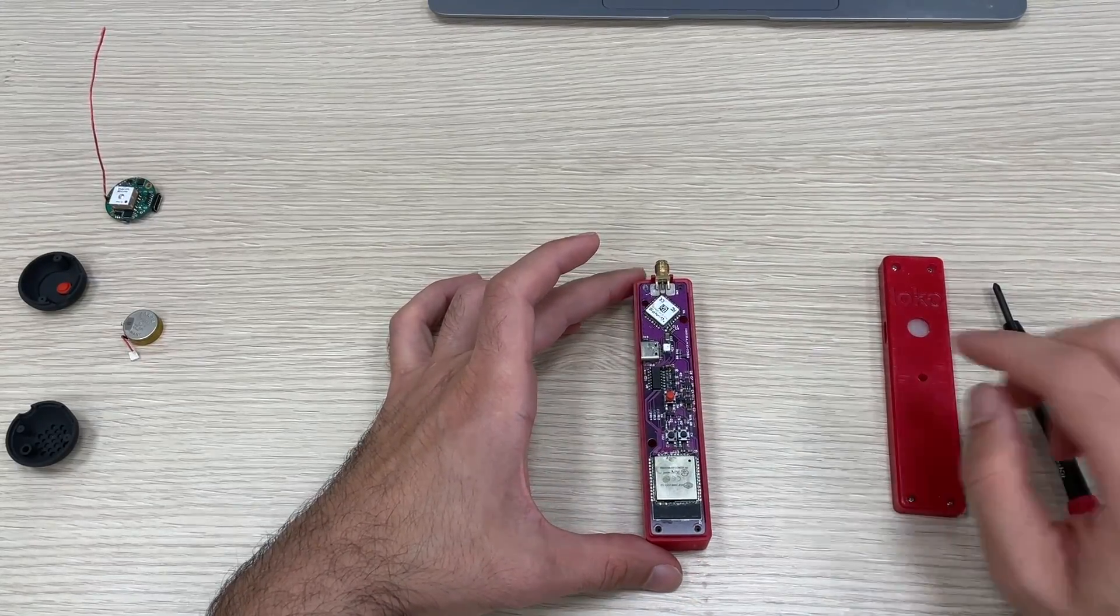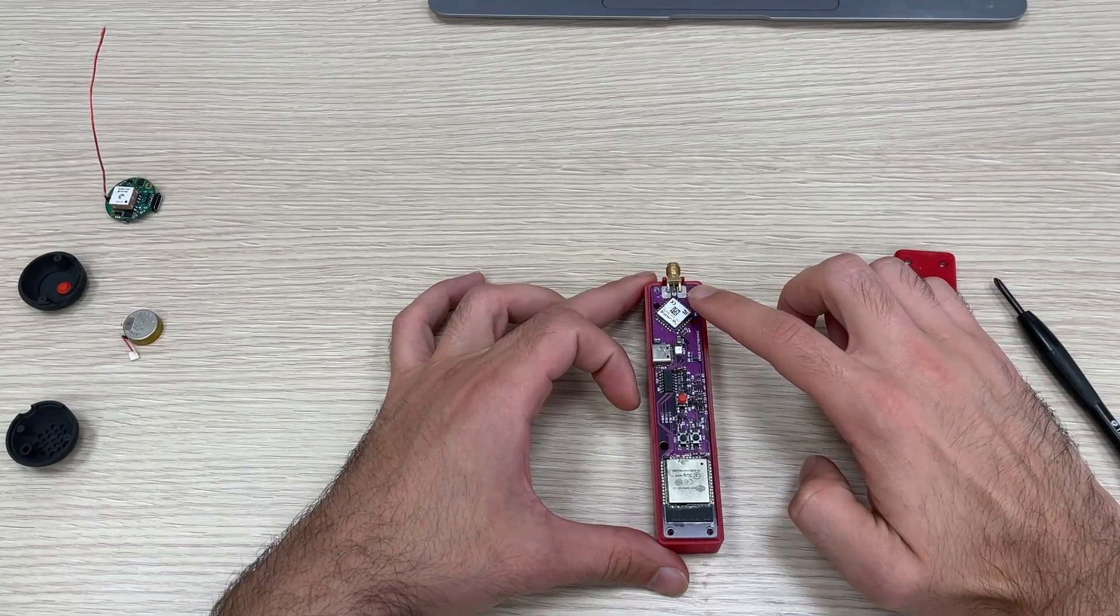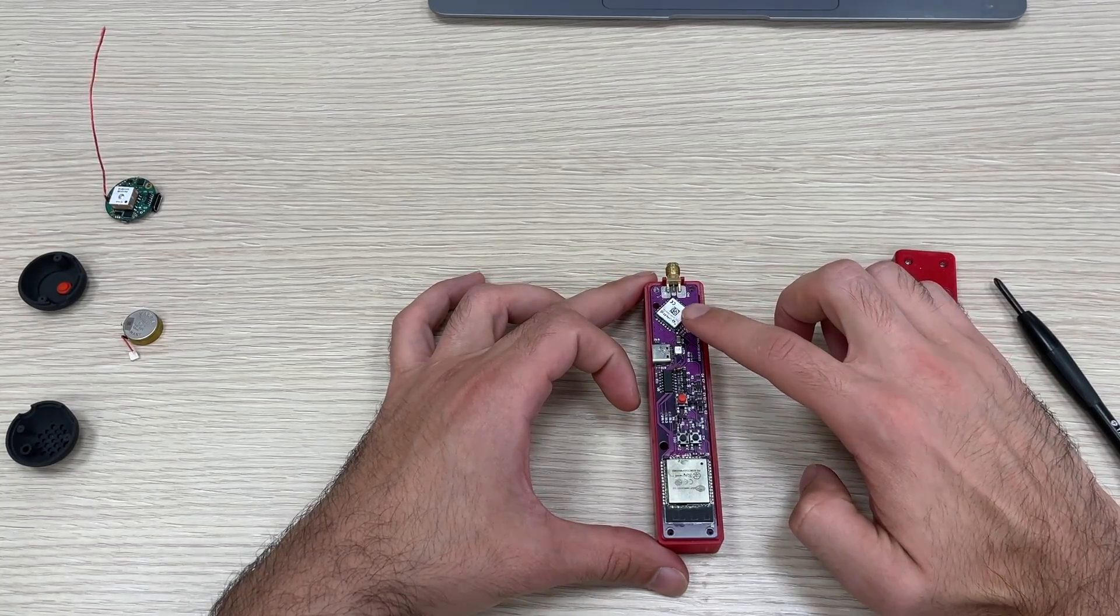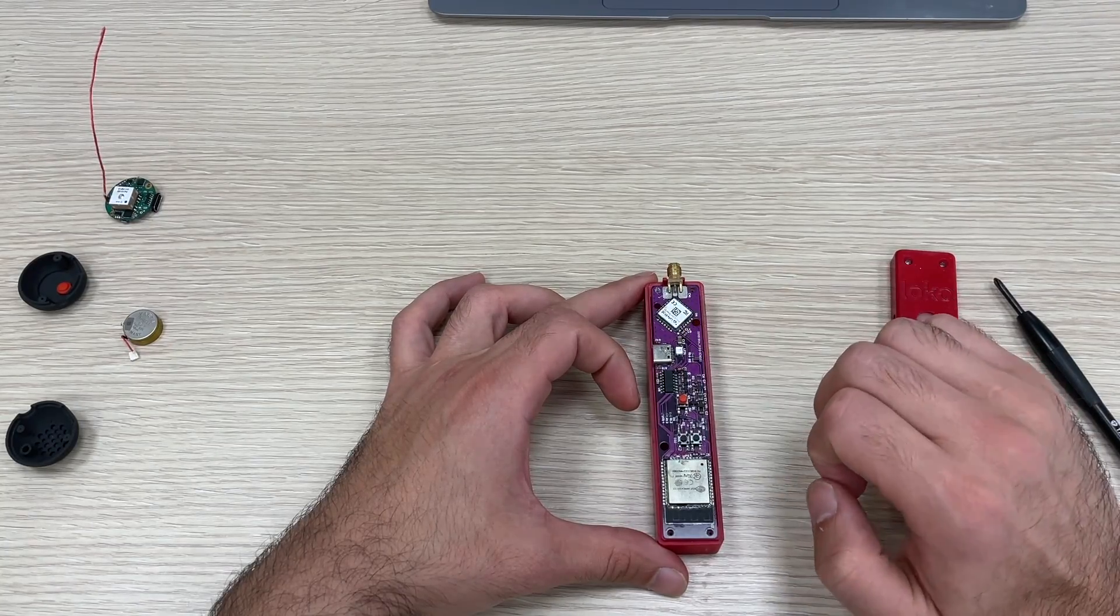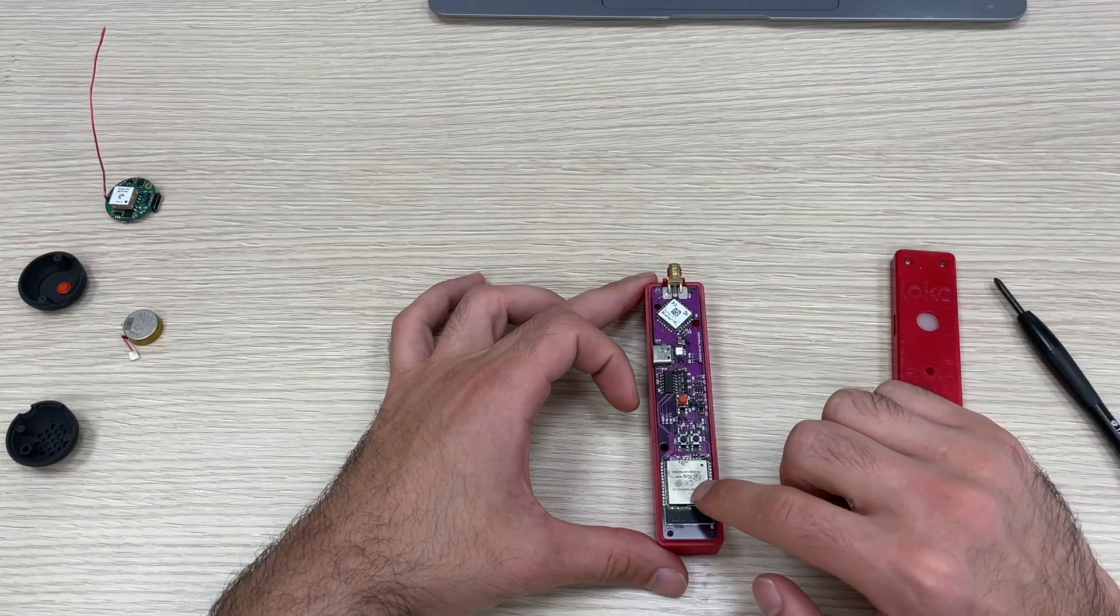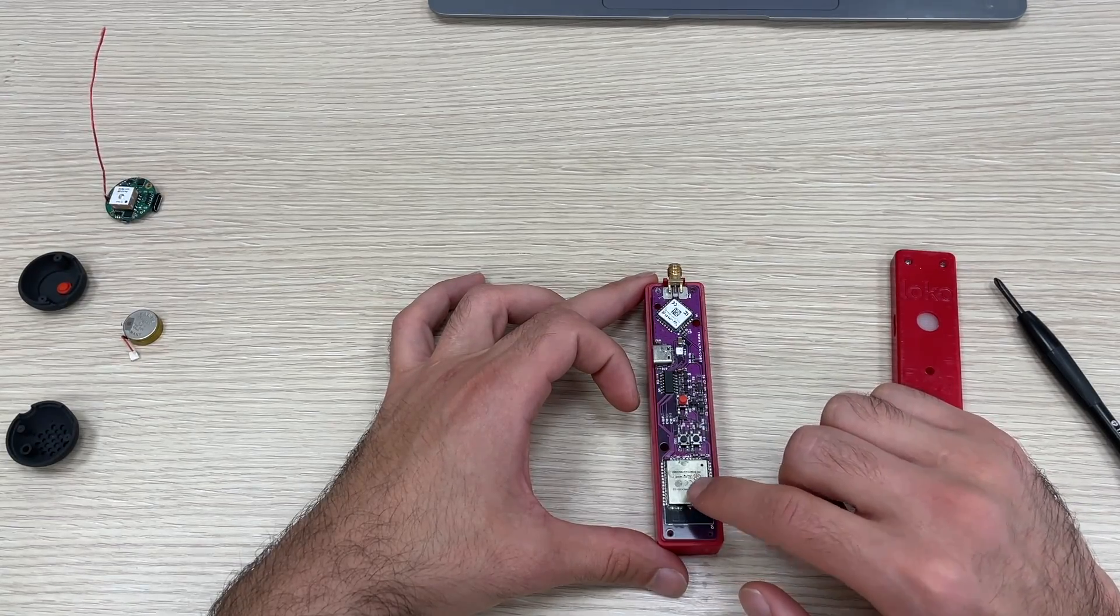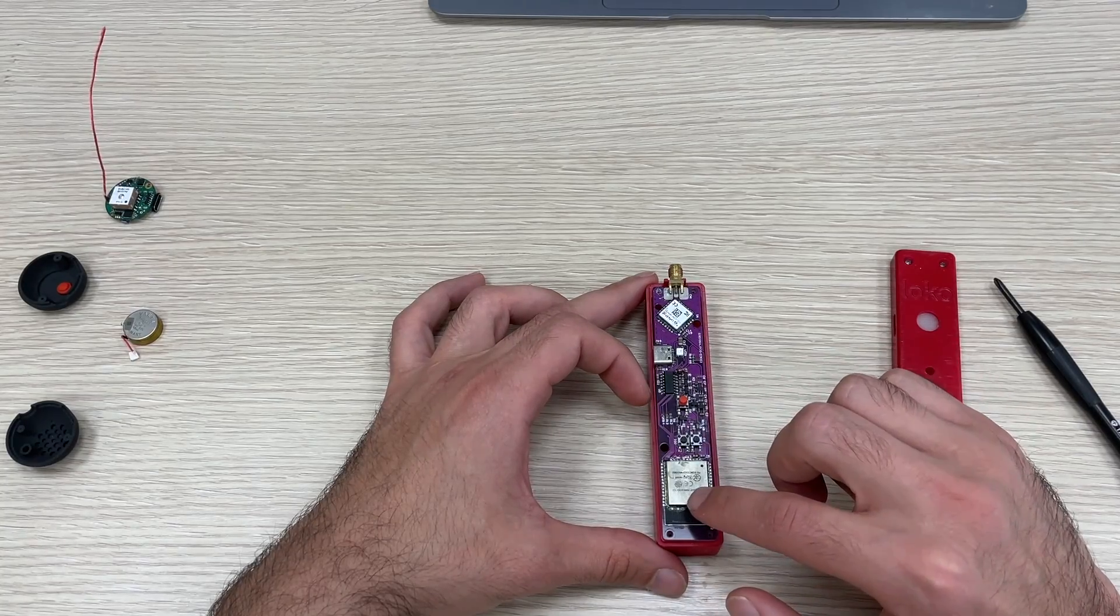We have a two layer PCB. On the top near the SMA connector there is a LoRa E5 module. On the bottom we have an ESP32 module. Note that in this loka ground unit we use ESP32 microcontroller as the main microcontroller.